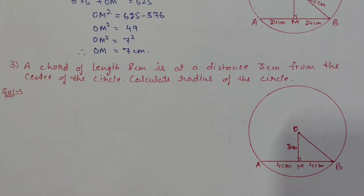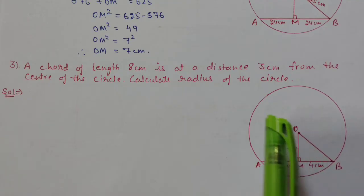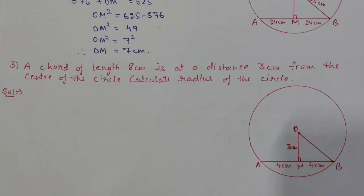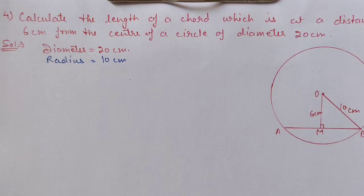Question 3: A chord of length 8 cm is at a distance of 3 cm from the center. Calculate the radius. In the figure, chord AB is 8 cm, so 4 cm on each side. The perpendicular from the center to AB is 3 cm. Since this is a right-angle triangle, we use the Pythagorean theorem. After calculation, the hypotenuse OB = 5 cm, and since OB is the radius, the radius is 5 cm.